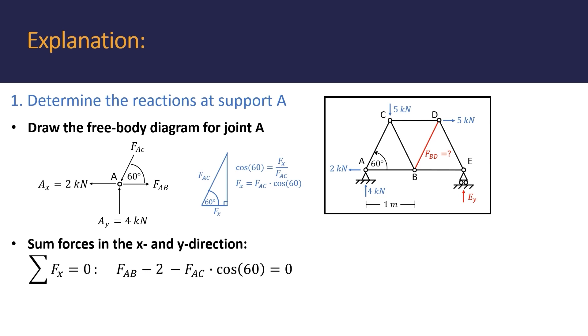Now, this first equation still contains two unknowns, so we can't solve it yet, but we can continue to write the equation for the sum of the forces in the y direction, which is given by 4, negative FAC, sine 60 equals 0.